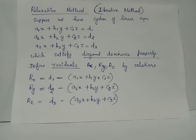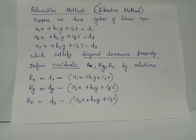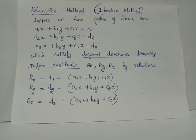The residuals are defined as: rx equals d1 minus (a1x + b1y + c1z), obtained by taking the left-hand side to the right-hand side. Similarly, ry equals d2 minus (a2x + b2y + c2z), and rz equals d3 minus (a3x + b3y + c3z).